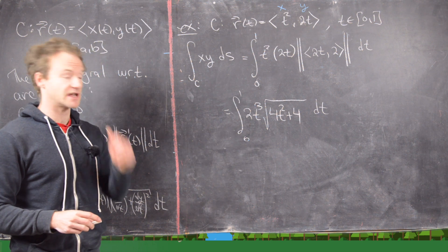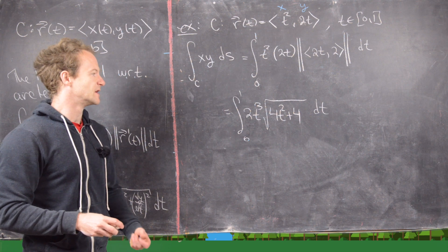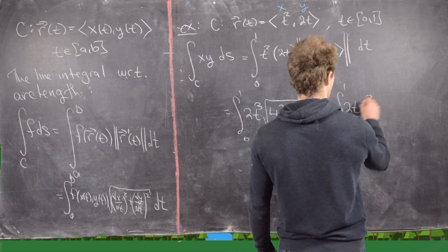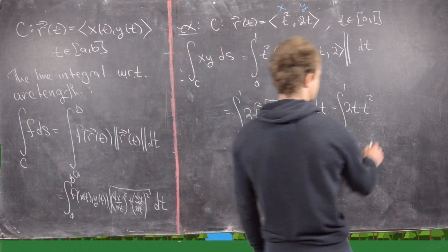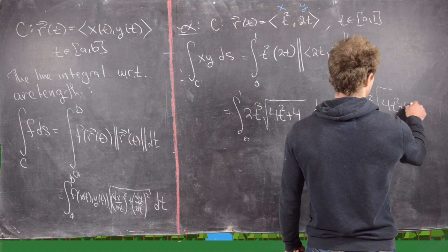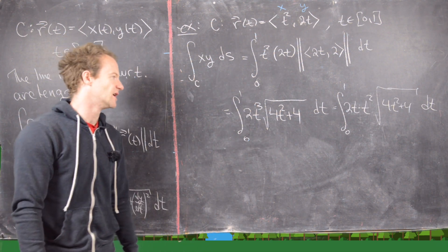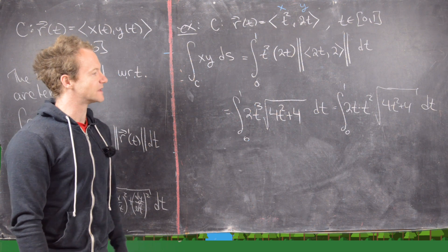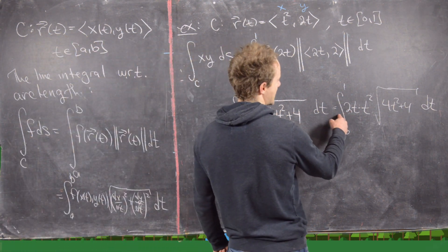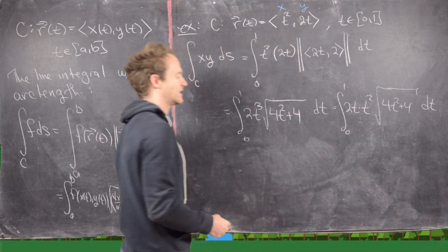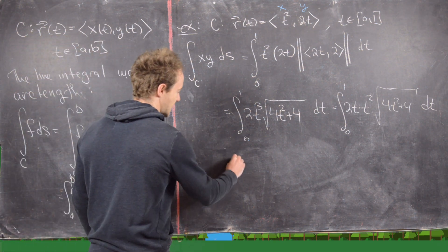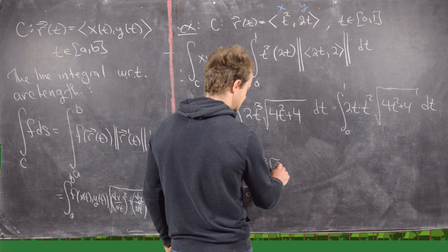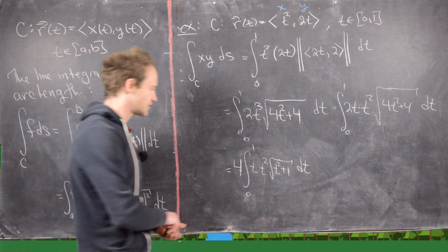This involves a substitution. Let's write it as the integral from 0 to 1 of 2 times T times T² times the square root of 4T² plus 4. You might leap to trig substitution, but there's a simpler way. I can factor the 2 out, and factor 4 out of the square root — which becomes a 2 outside — giving 4 out front. So we have the integral from 0 to 1 of T times T² times the square root of T² plus 1.